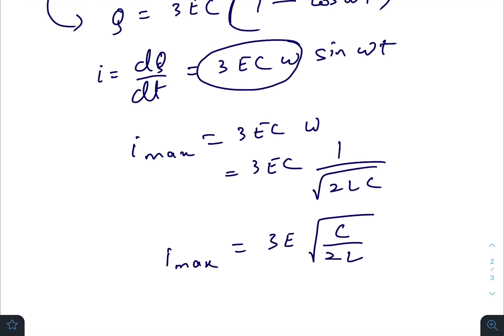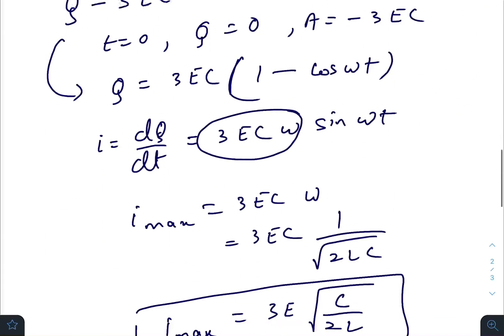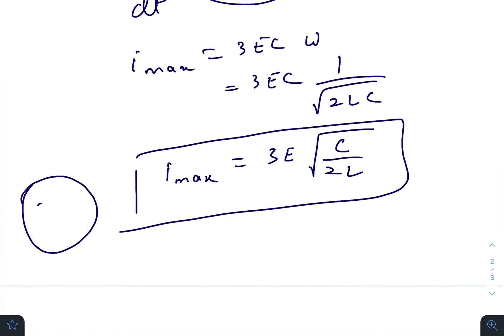So this is your maximum current that will flow through the coil or the inductor. I hope you all have found this video helpful and informative. Thank you.